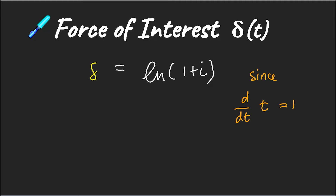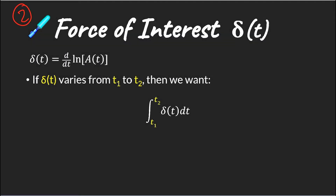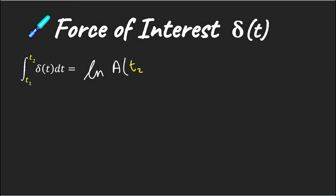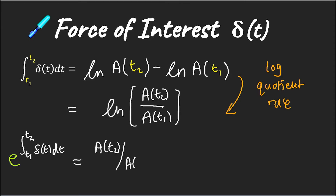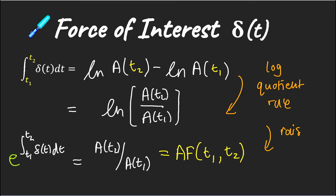If you haven't checked this out yet please see the link above or in the description below. When our force of interest function is a function of time, we need to integrate from time t1 to time t2. Looking at the function itself, we can see that it is a derivative of ln(a(t)). When we integrate we ask what is the antiderivative — and in this case it is simply ln(a(t)). So we evaluate ln(a(t)) from time t1 to time t2, which gives us ln(a(t2)/a(t1)). Raising both sides by e to get rid of the ln, we end up with our accumulation factor a(t2)/a(t1).